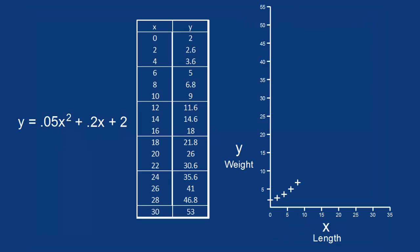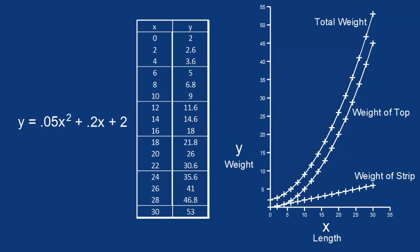You can see that as the length of the side gets larger, the weight gets heavier faster and faster. Here, let's compare that graph to the graph of the top and the graph of the strip and the graph of the legs.